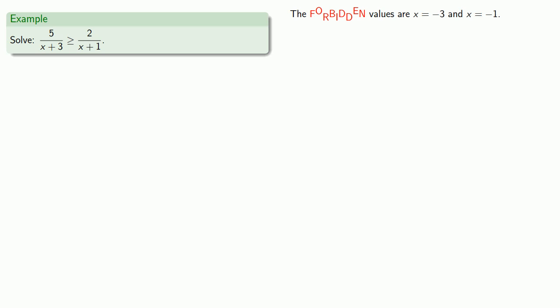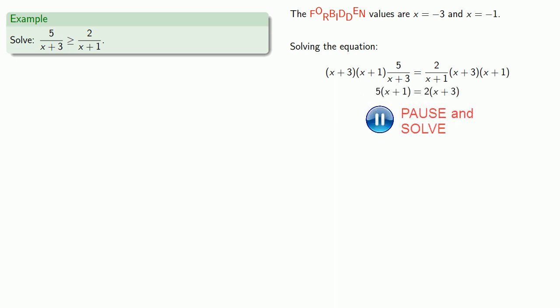We'll multiply through by our denominators x plus 3 and x plus 1. We'll get a new equation, which we can solve. And that gives us solution x equals 1 third and three critical values.